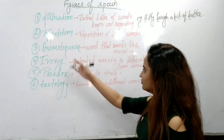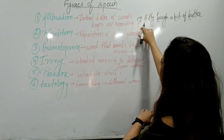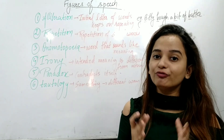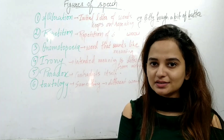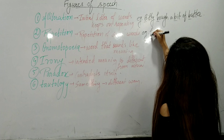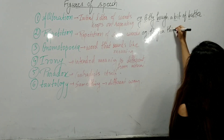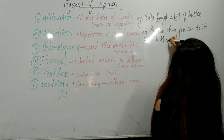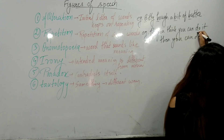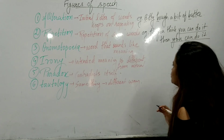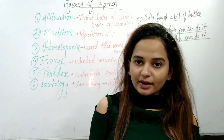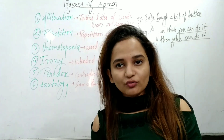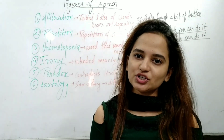Next figure of speech is repetition. In alliteration, it is the initial letter that repeats. But in repetition, entire words or phrases can repeat. For example: 'If you think you can do it, then you can do it.' Here, 'you can do it' is repeated. So in sentences or statements where phrases or words are repeated, we call it repetition.